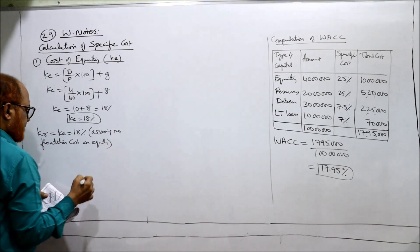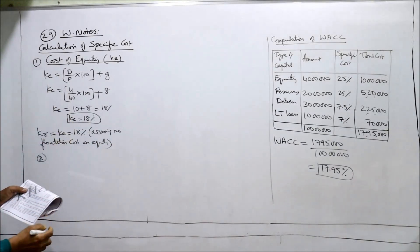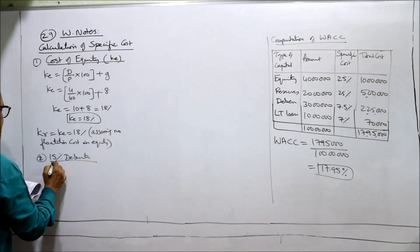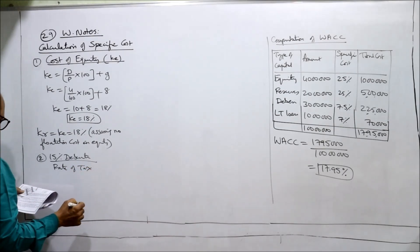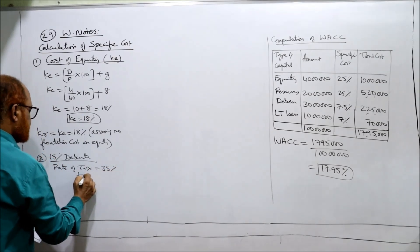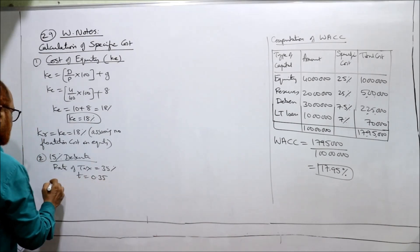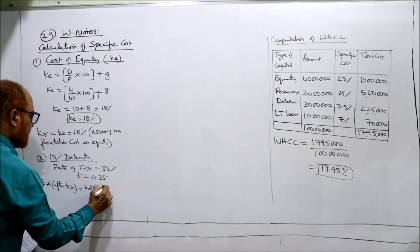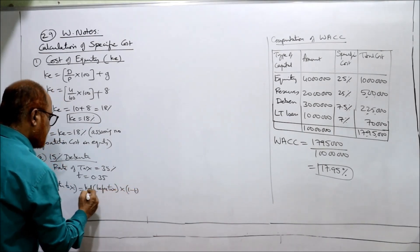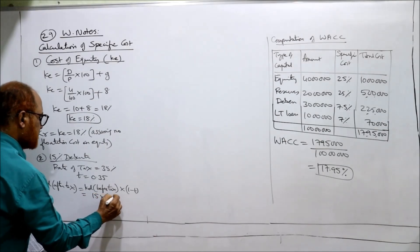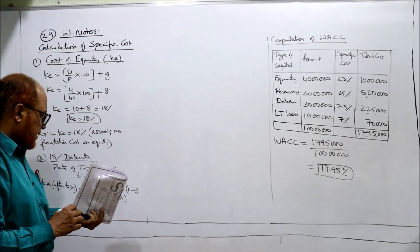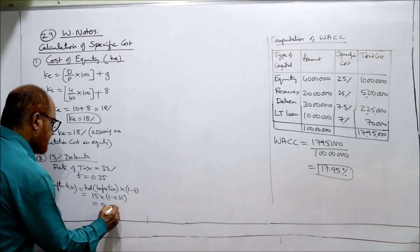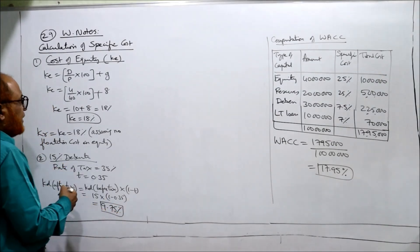Cost of equity and cost of retained earnings completed. Now 15% debentures: rate of tax is given as 35%, T is equal to 0.35. KD after tax is equal to KD before tax into 1 minus T, that is 15 into 1 minus 0.35, so 15 into 0.65 equals 9.75%. This is the KD after tax for 15% debentures.